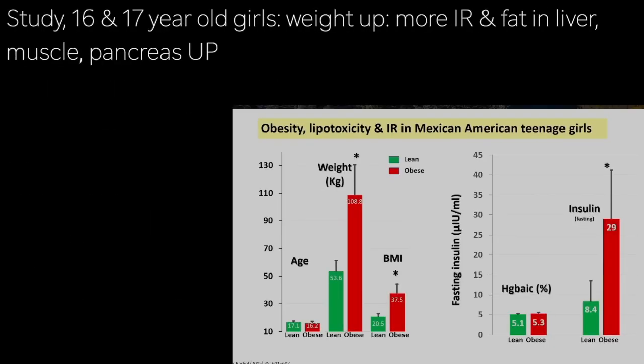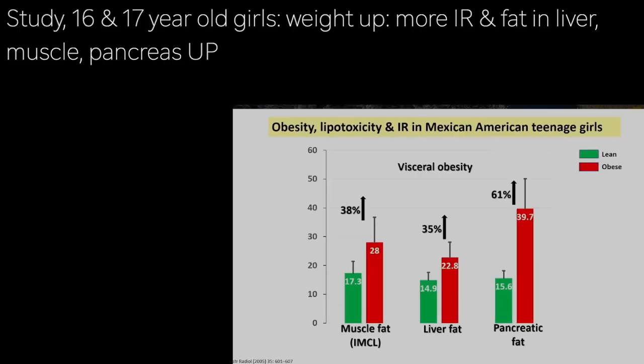One does not need to be in their 40s to get lipotoxicity. This is a study in teenage Mexican-American girls aged 16 or 17. When their weight goes up, they become insulin resistant — and not only do they get insulin resistant, but muscle fat, liver fat, and pancreatic fat goes up dramatically even at this young age.